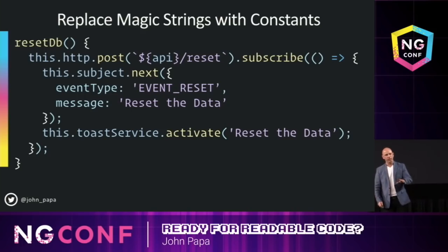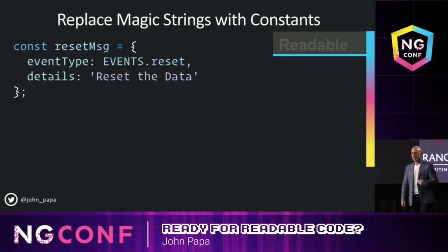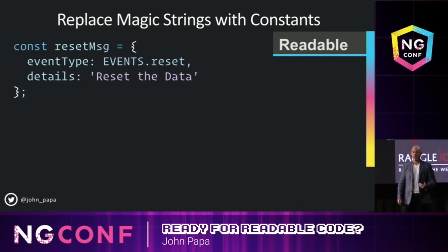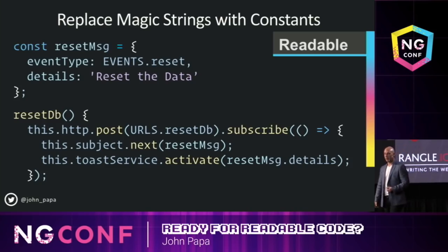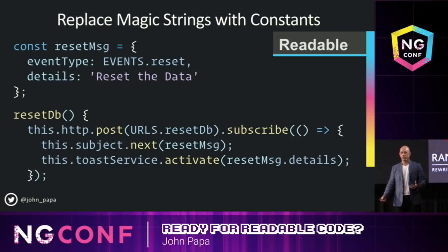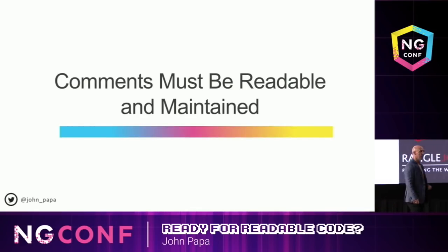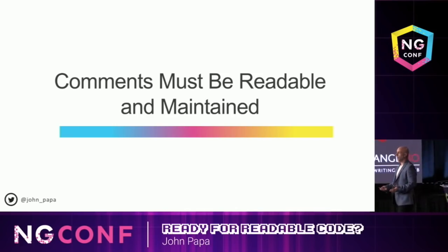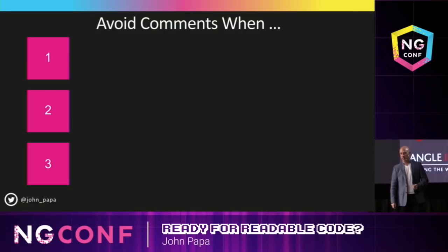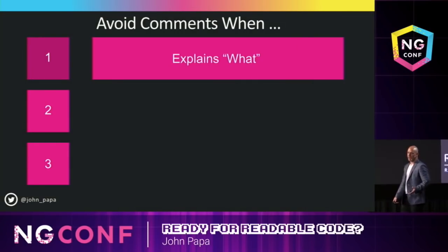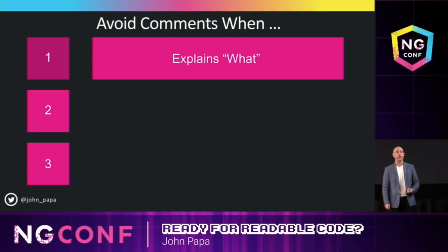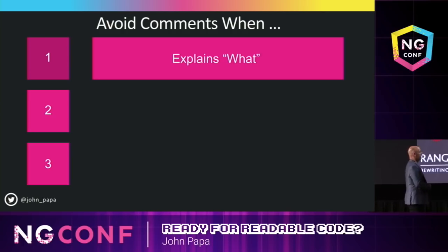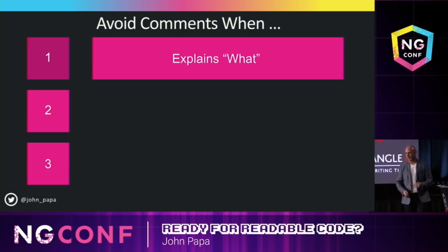Replacing magic strings — arguably this isn't too hard to read, but it might be easier if we pull those strings out into constants, get some code reuse, and put those into our code to make it more readable. Comments must be readable and maintained — they are technical debt. How often do you look at code, see a comment, and have no idea what it's referring to? It's in the middle of nowhere, someone else wrote it, probably from eons gone by. When do you avoid comments? If you're explaining what the code does — 'here's the beginning of the if, here's the end of the if' — avoid that.